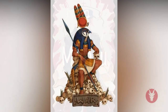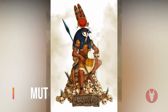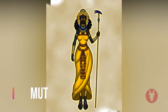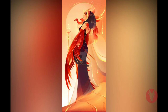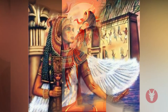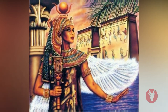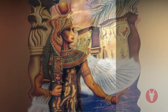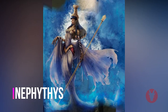Mut formed part of the Theban Triad. She was one of the daughters of Ra, the wife of Amun and mother of Khonsu. She was the vulture goddess and is often depicted as a woman with a long, brightly colored dress and a vulture headdress mounted by the double crown. In her more aggressive aspects she is shown as a lion-headed goddess. Like Isis and Hathor, Mut played the role of divine mother to the king. Her amulets, which depict her as a seated woman suckling a child, are sometimes confused with those of Isis.